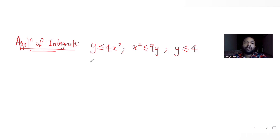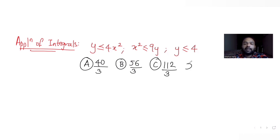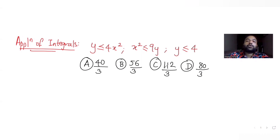We have been given four answer options: the first is 40/3, the second is 56/3, the third is 112/3, and the last option is 80/3. We need to figure out which of these four options is the correct answer.